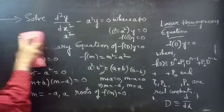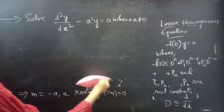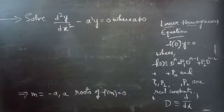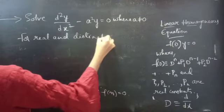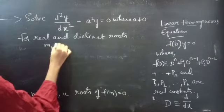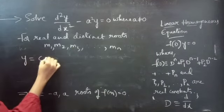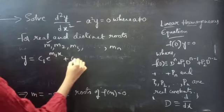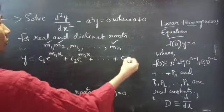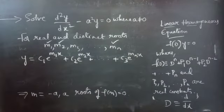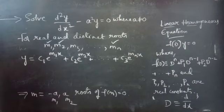Now that we have the roots, let's write the general solution. For real and distinct roots m₁, m₂, ..., mₙ, the solution is y = c₁e^(m₁x) + c₂e^(m₂x) + ... + cₙe^(mₙx). Here our roots are m = −a and m = +a, so we consider −a as m₁ and +a as m₂.